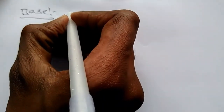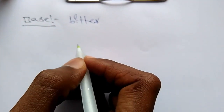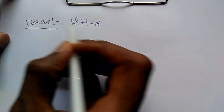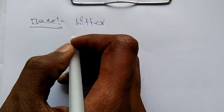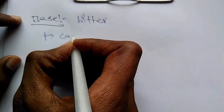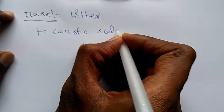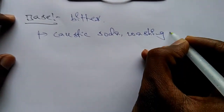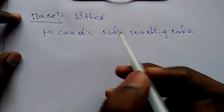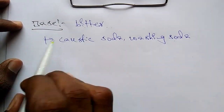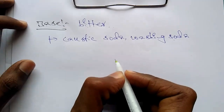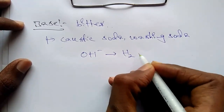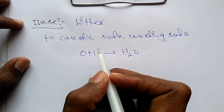Next we discuss bases. A base is the substance which has a bitter taste — unlike the sour taste of acids. Examples of bases include caustic soda and washing soda. Based on the actual definition: a base is a substance which can deliver OH- ions in aqueous solution.